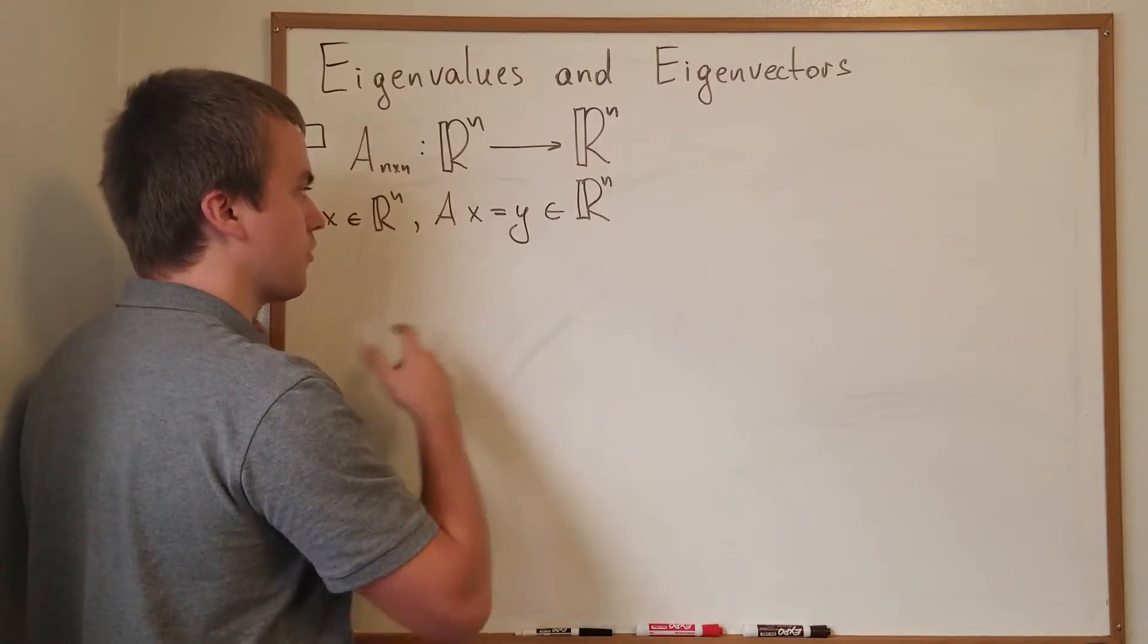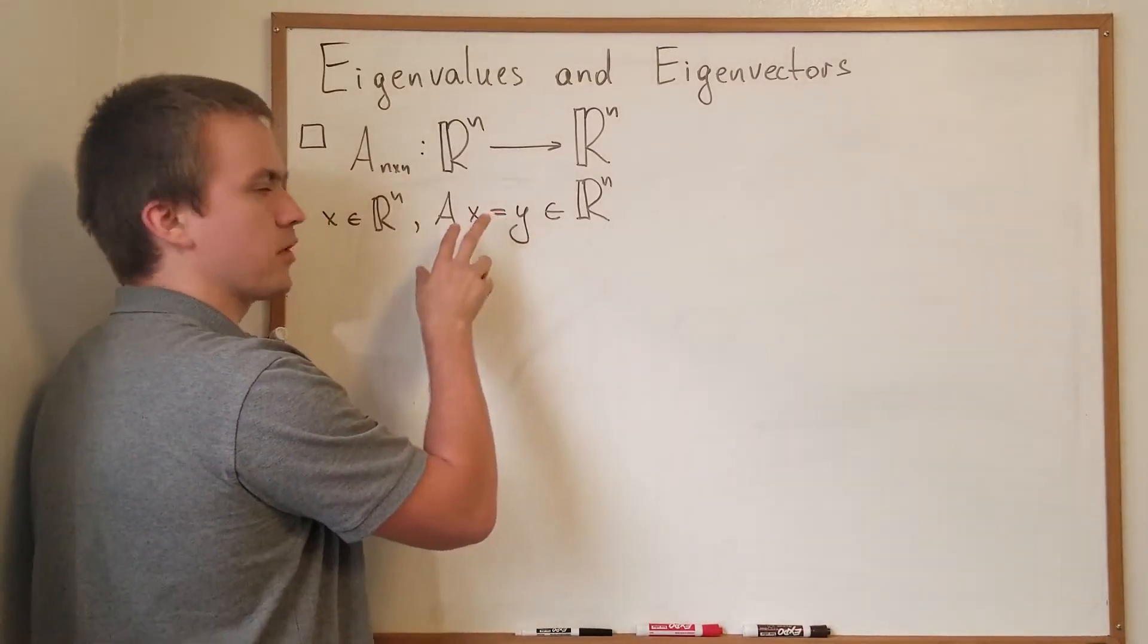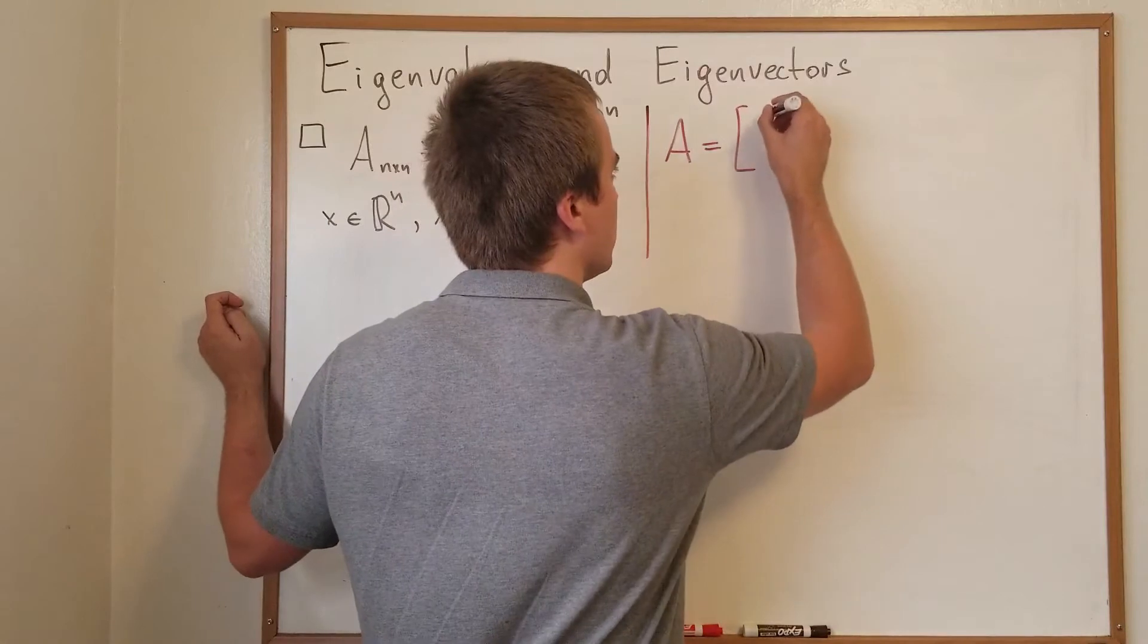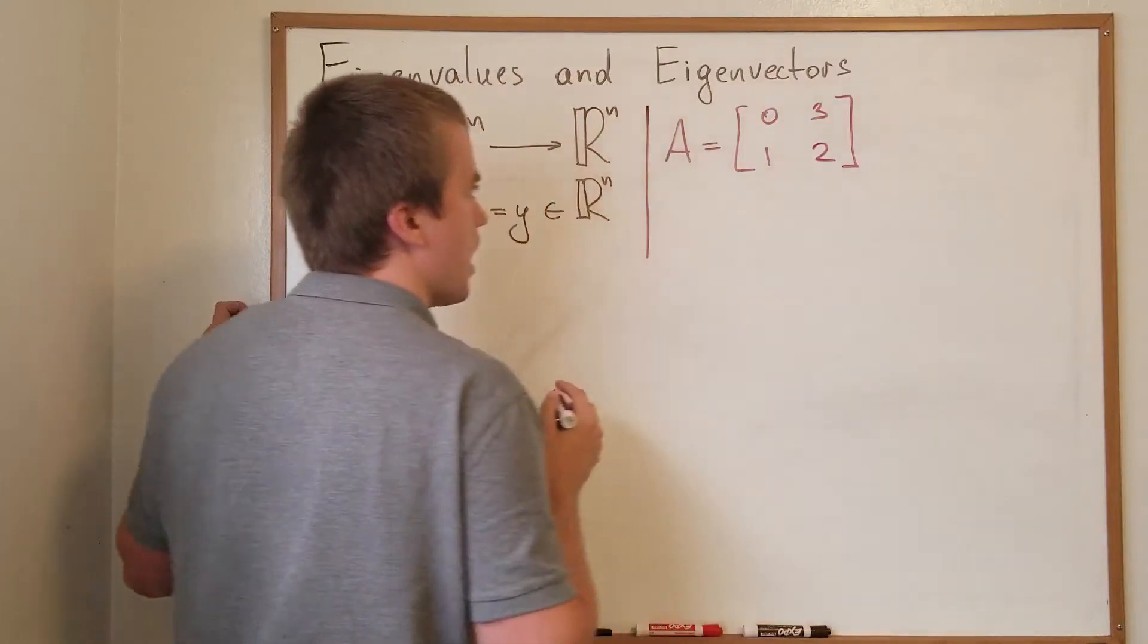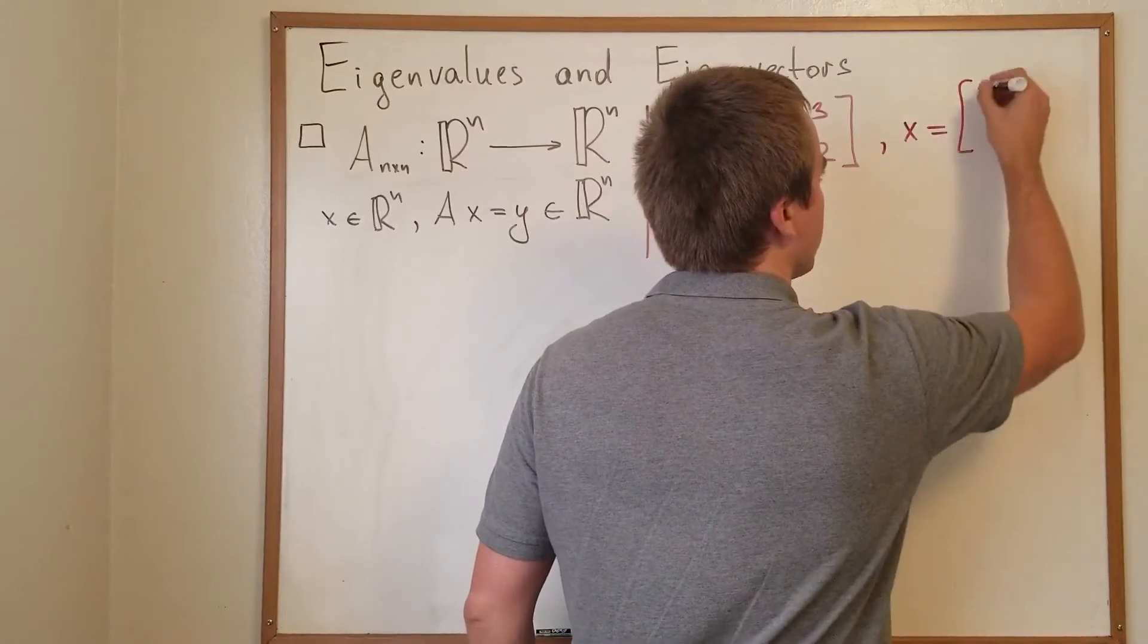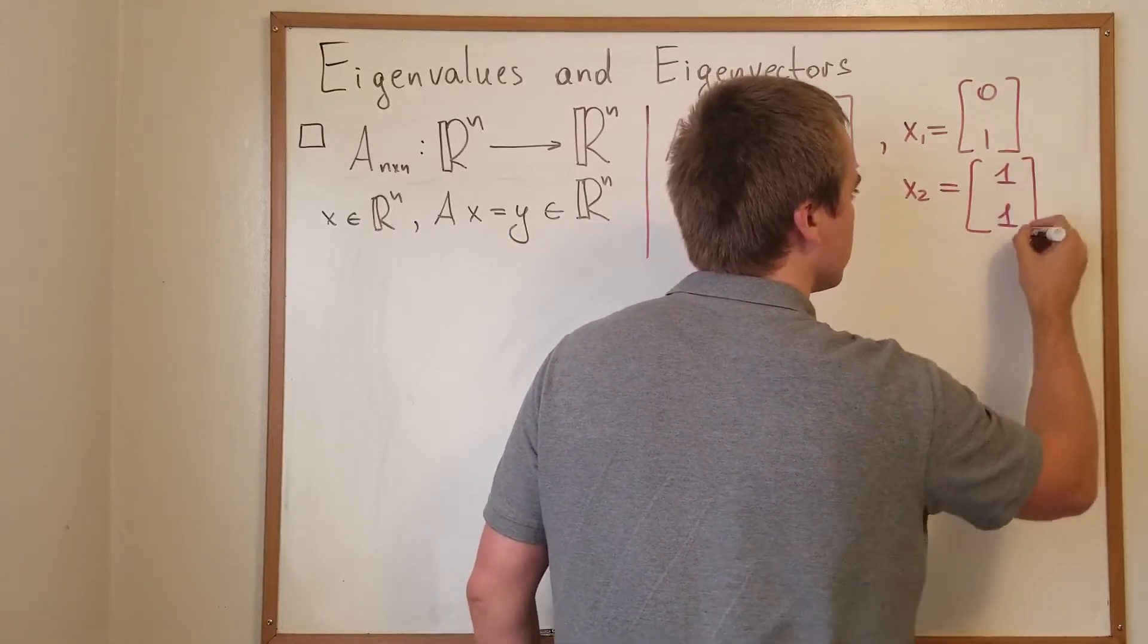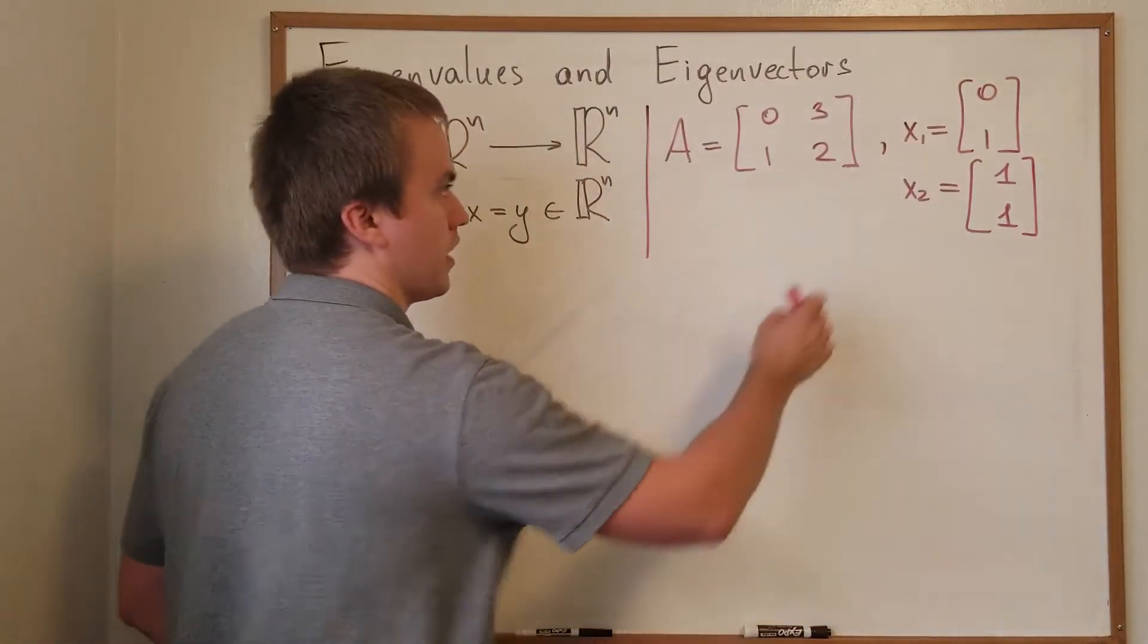Then we can ask a certain thing about our y. Before we discussed that if y is going to be zero then we get the definition of nullity. But let's take some matrix A, and let's say my matrix A is going to be [0, 3; 1, 2]. And let's choose two vectors x. Let's choose x1 = [0, 1] and let's choose x2 = [1, 1]. Let's see what is going to happen when we take our matrix A and multiply by x1 and x2.